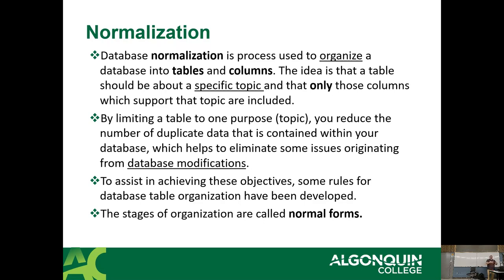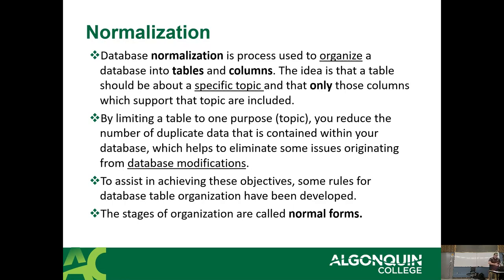To assist in achieving those objectives and avoiding database modification issues, rules have been developed called normal forms. There are three reasons to normalize data: first, to minimize duplicate data; second, to avoid or minimize modification issues; and third, to simplify queries — not make them shorter, but easier to work with.